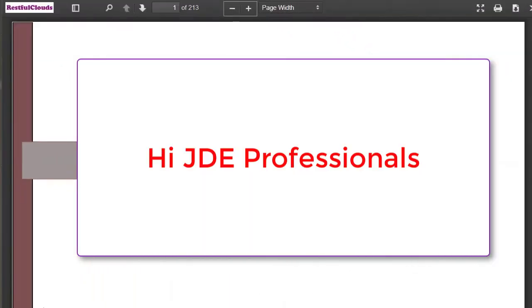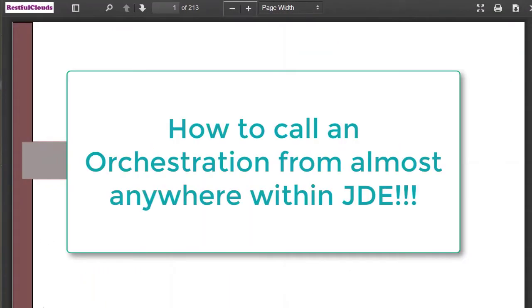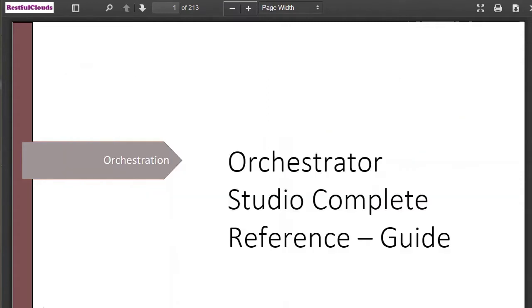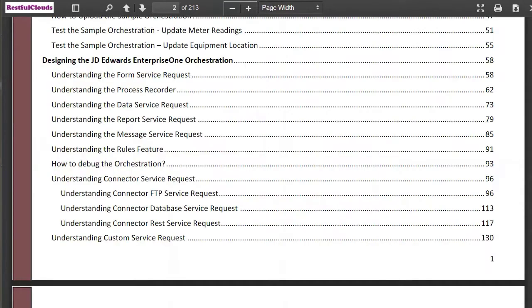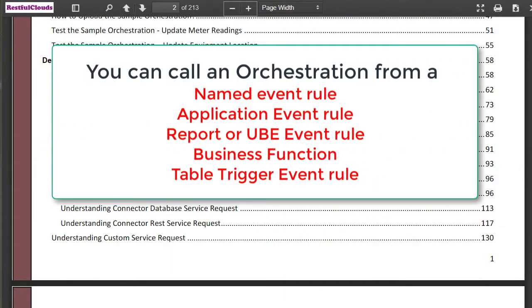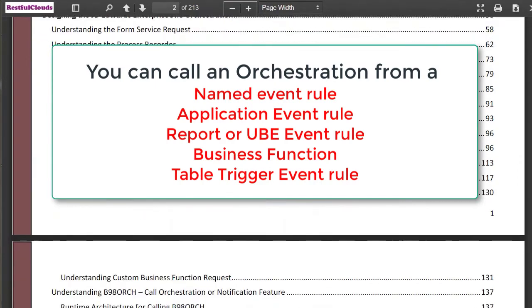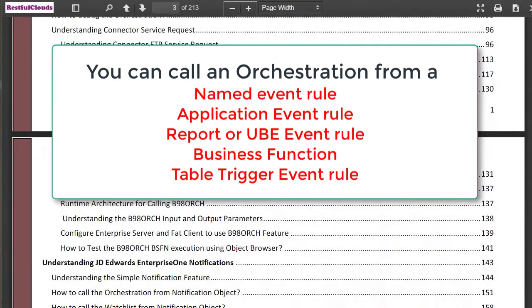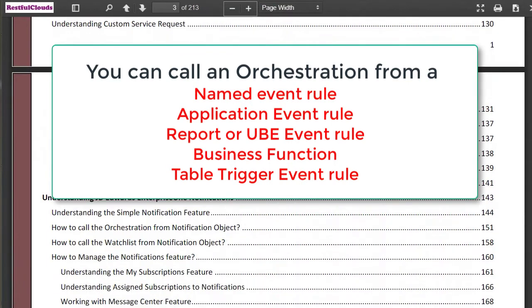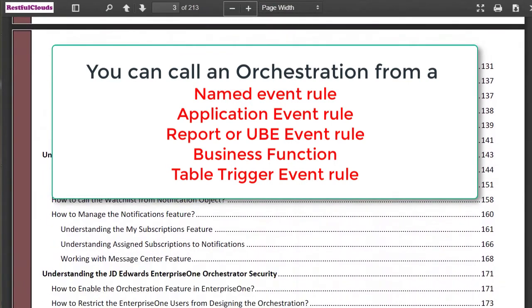Hi JD professionals, welcome back. Today we'll show you how to call an orchestration from within the event rules of your custom code. You can call it from a named event rule, an application event rule, a report or UBE event rule, or a business function or table trigger event rule.